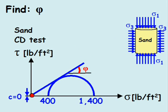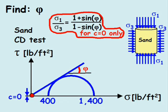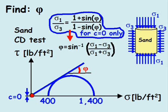For a cohesionless soil, we can solve for the angle of internal friction using this equation. Where the friction angle is the arc sine of the quotient of sigma-1 minus sigma-3 divided by sigma-1 plus sigma-3.